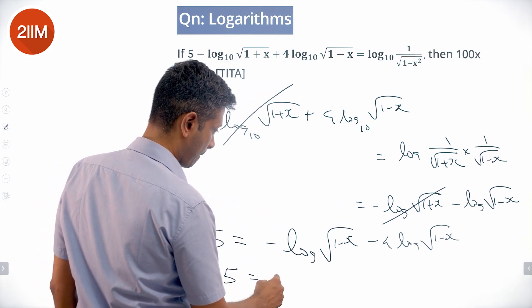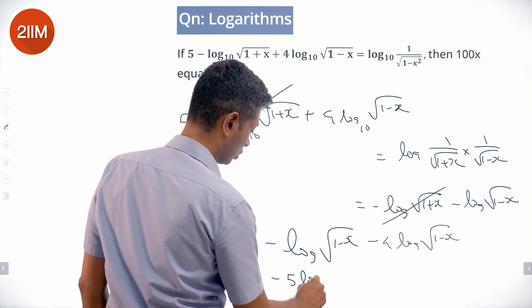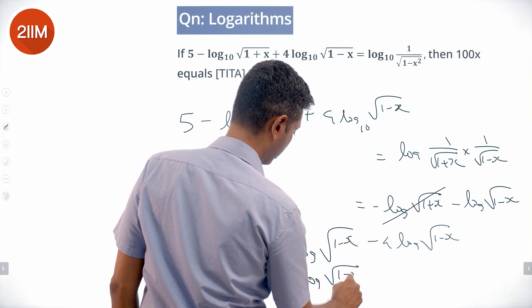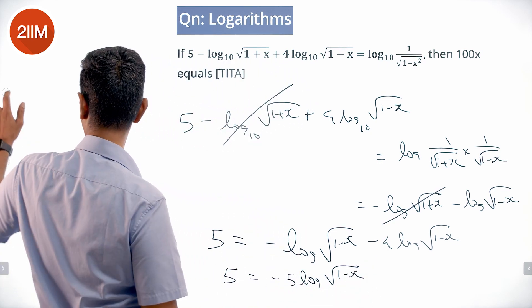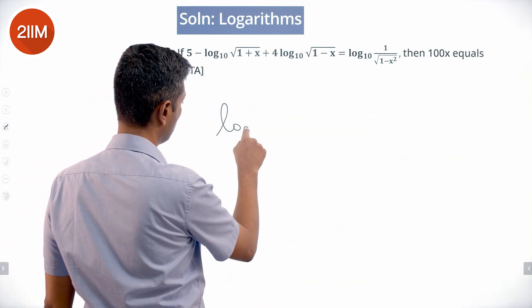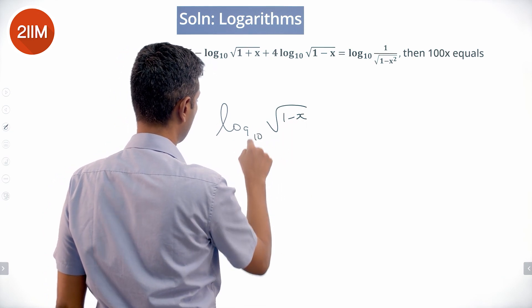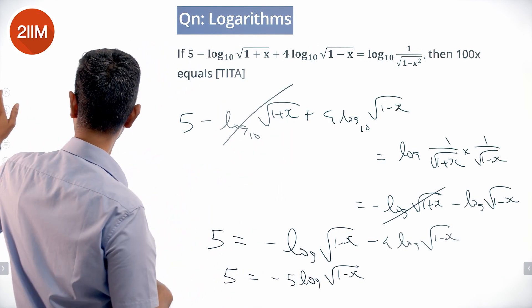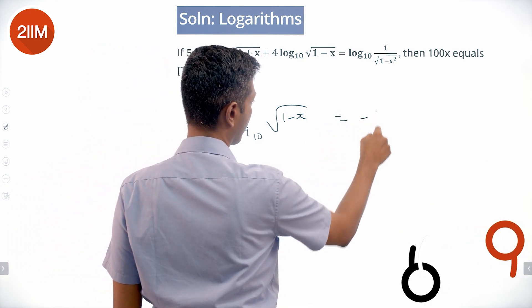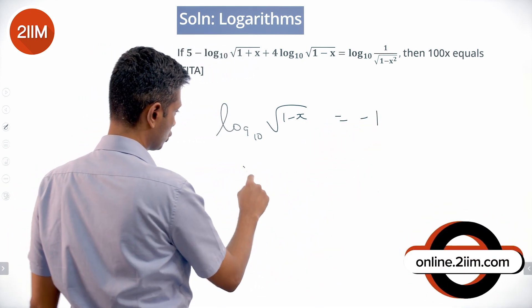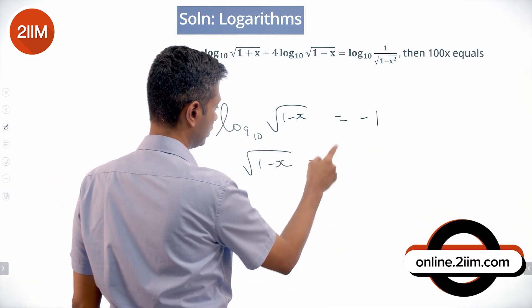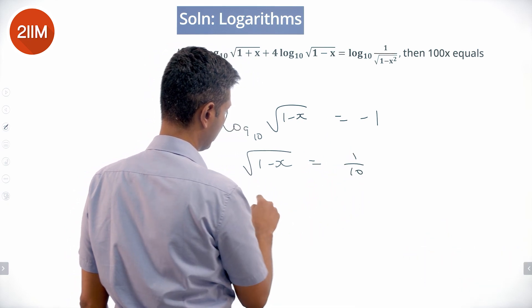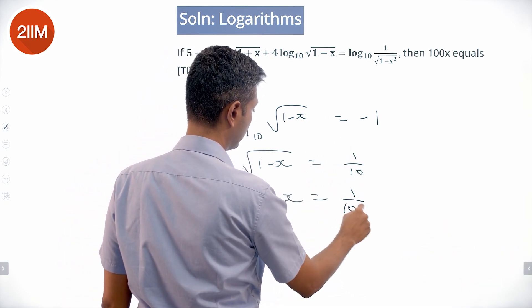5 equals minus 5 log of square root of 1 minus x, or log of square root of 1 minus x to the base 10 is minus 1. Or square root of 1 minus x is 10 power minus 1, which is 1 by 10. So 1 minus x is 1 by 100.